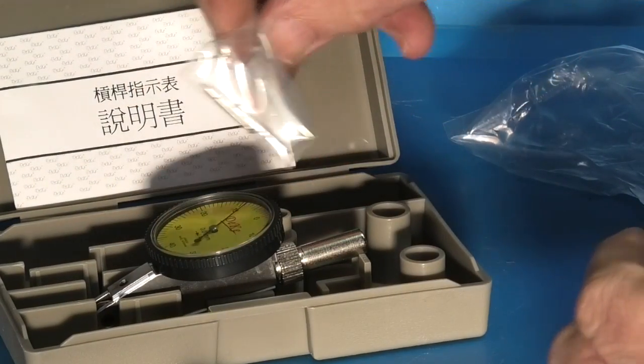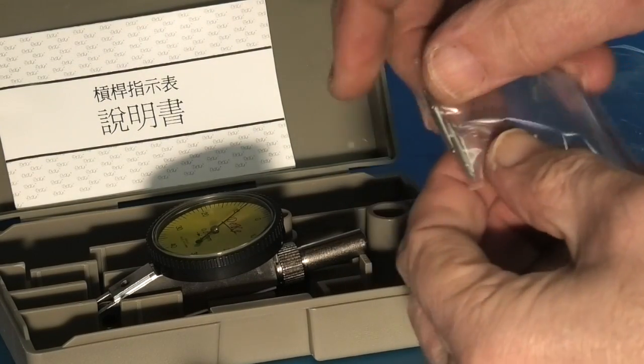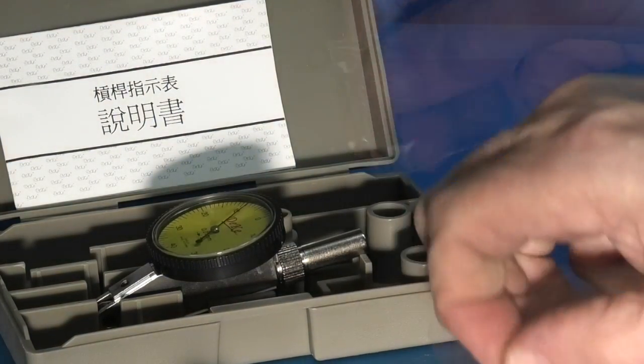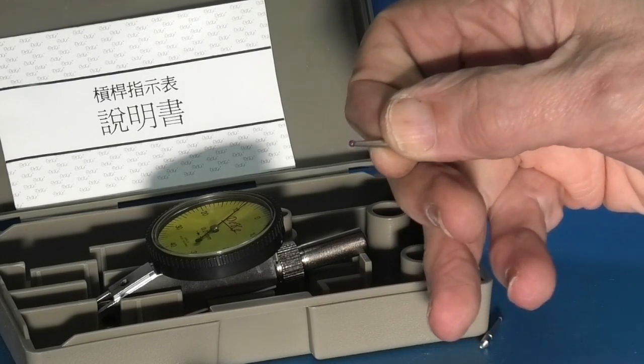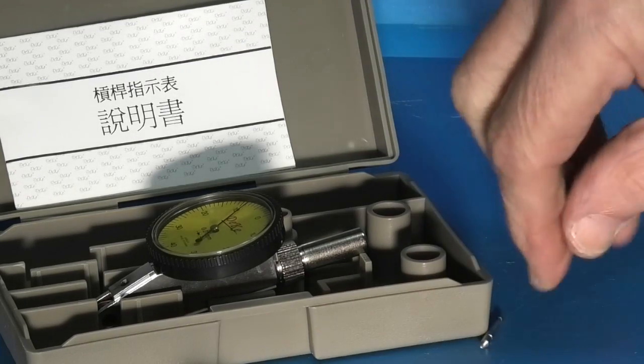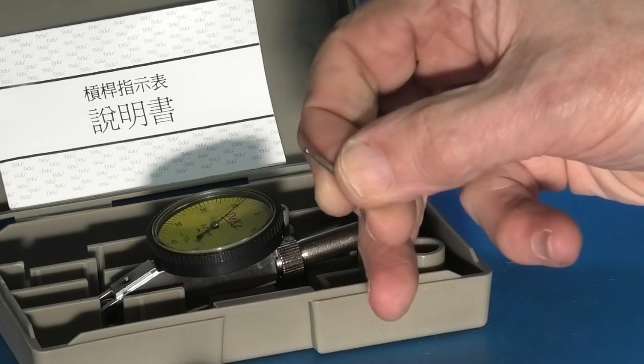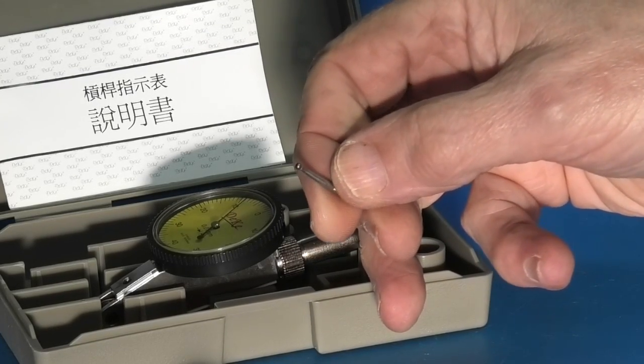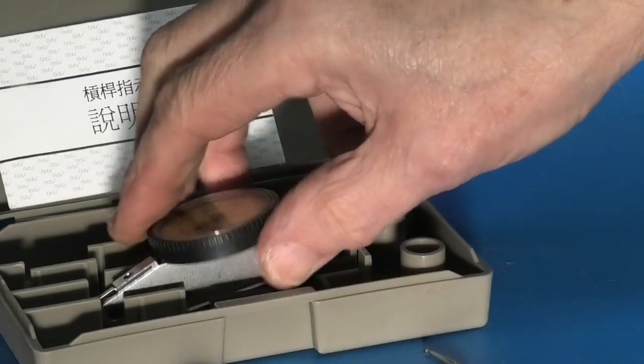It comes with two spare probes. The one probe has a ruby type ball on the end. The other probe has a steel ball on the end. And the probes are all the same length so they are interchangeable.